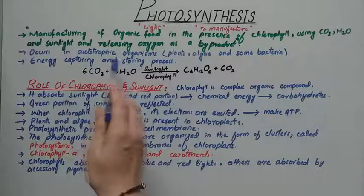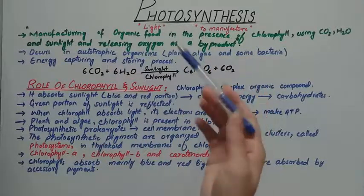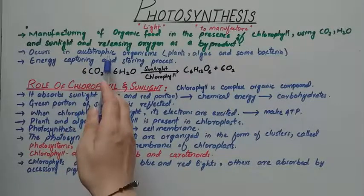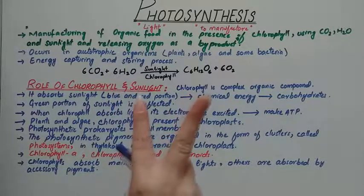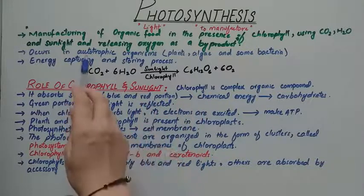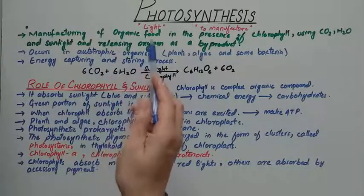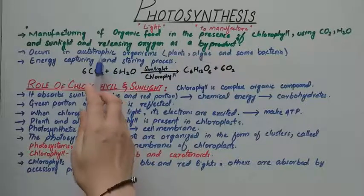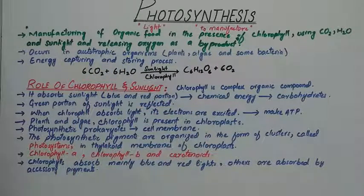Photosynthesis occurs in autotrophic organisms like plants, algae, and some bacteria. Organisms are divided into two categories: autotrophic and heterotrophic. Autotrophs are those organisms which can prepare their own food inside their body, while heterotrophs cannot manufacture their own food. Autotrophs manufacture their own food using sunlight, while heterotrophs do not have any such system.